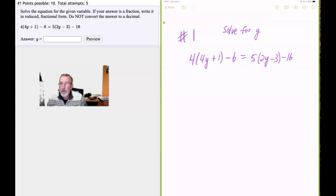So this first one, solve the equation for the given variable. If your answer is a fraction, write it in reduced fractional form. Do not convert the answer to a decimal. And so here's the problem: 4 times 4y plus 1 minus 6 is equal to 5 times 2y minus 3 minus 16.